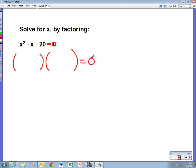Just like the last problem, we make two sets of parentheses. We'll put x and x. Now you'll notice I use negative 20 here again, but this time I want to know factors of negative 20 that give us a sum of negative 1.